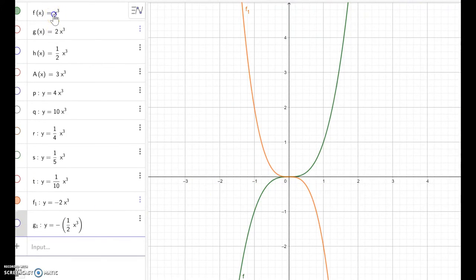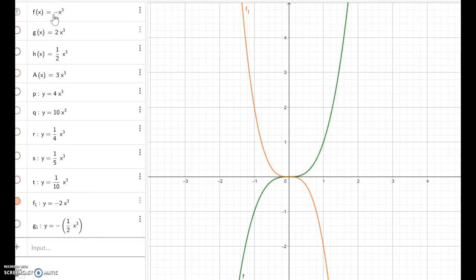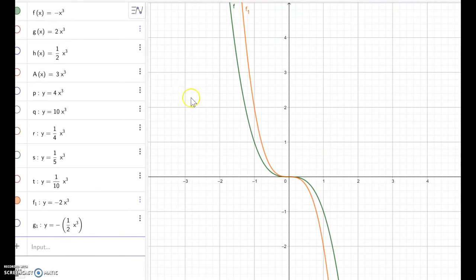So I also write the given axis minus x cube so that we compare better. So negative x cube and then negative 2 x cube. So this one is much narrower and close to y-axis.